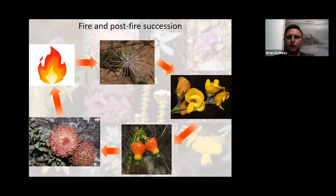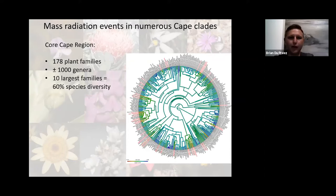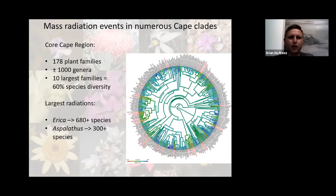This has all led to having so many species in the Cape. We have 178 plant families known from the region with about 1,000 genera. Interestingly, the 10 largest families make up 60% of our diversity. Among the larger radiations we have about 680 Erica species and also 300-plus Aspalathus species.